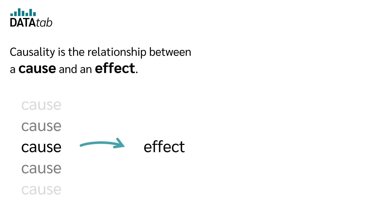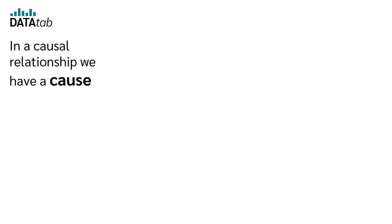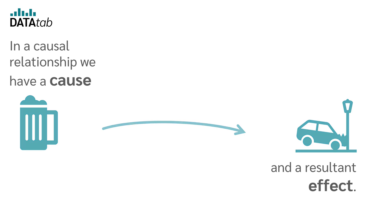What is causality and what is the difference between causality and correlation? Causality is the relationship between a cause and an effect. In a causal relationship, we have a cause and a resultant effect.